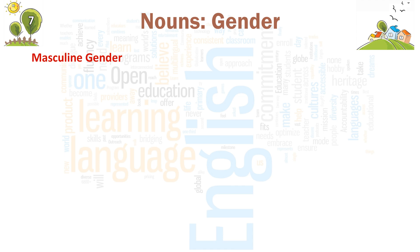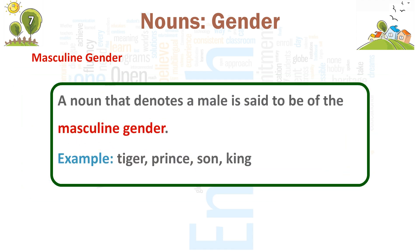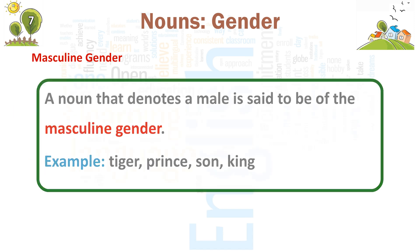Masculine gender. A noun that denotes a male is said to be of the masculine gender. Examples: tiger, prince, son, king.